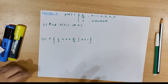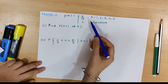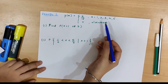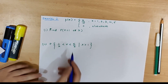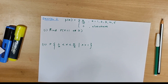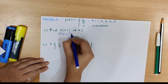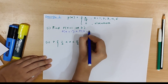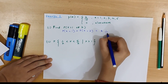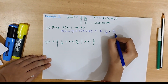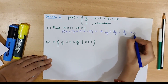Let's move on to our second example where P(x) = x/15 for x = 1, 2, 3, 4, 5 and 0 elsewhere. The first question is finding P(x = 1 or 2). This equals P(x = 1) + P(x = 2) = 1/15 + 2/15 = 3/15 = 1/5.